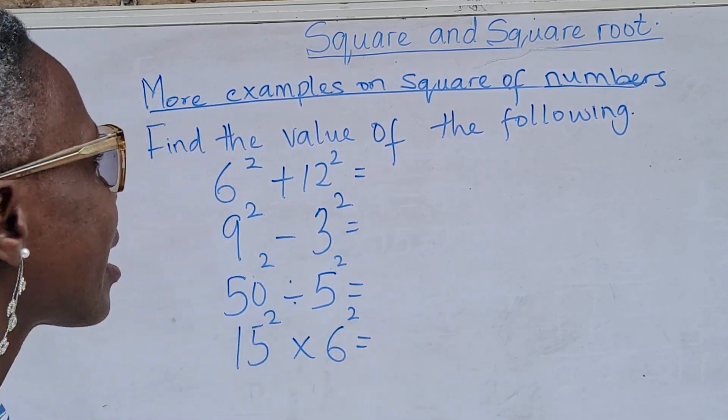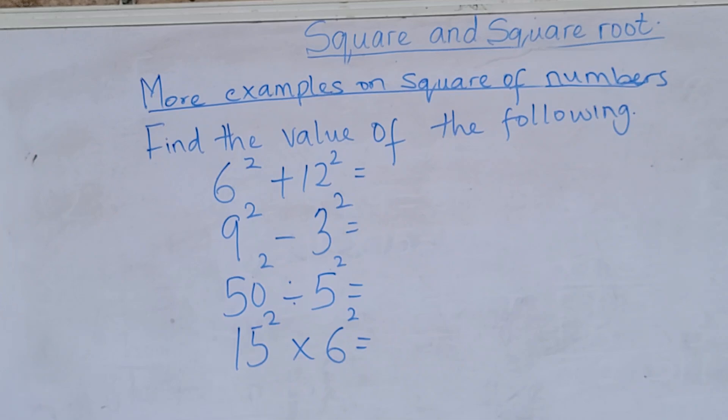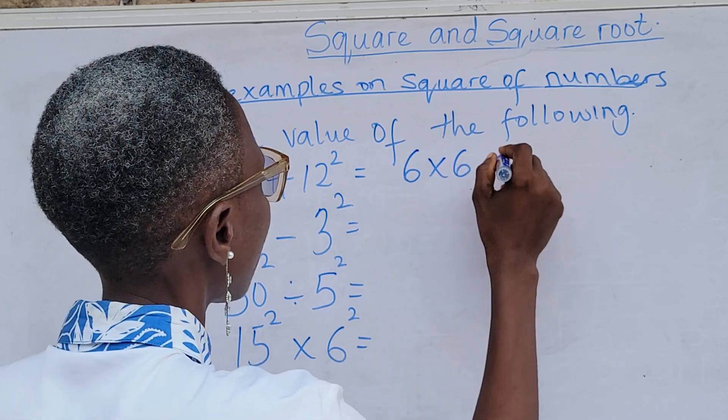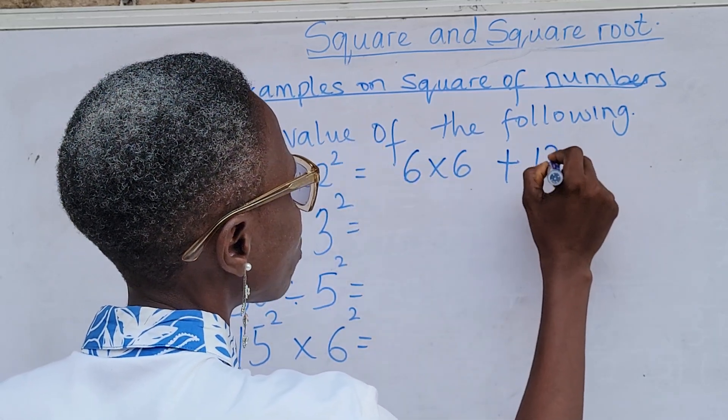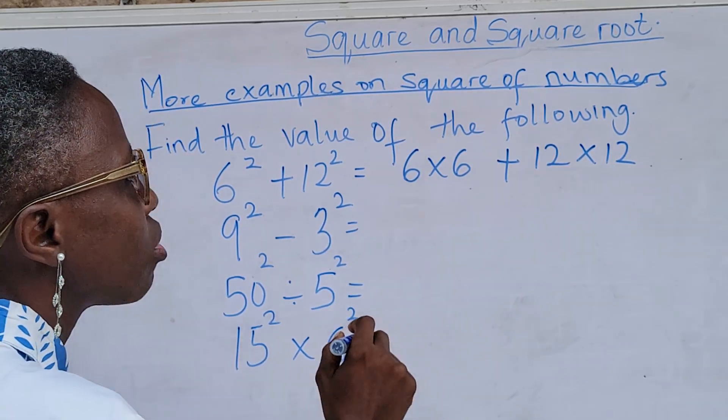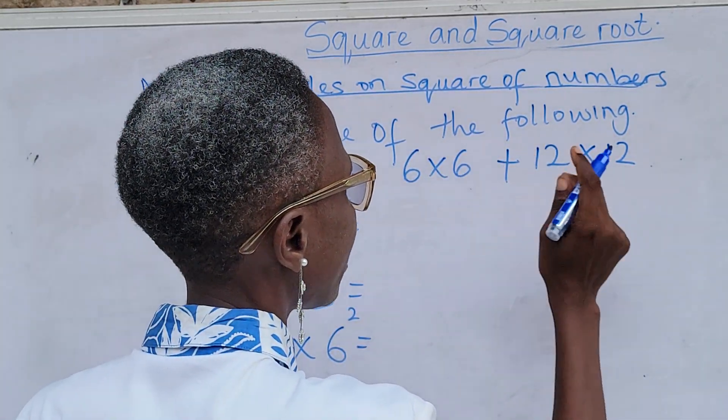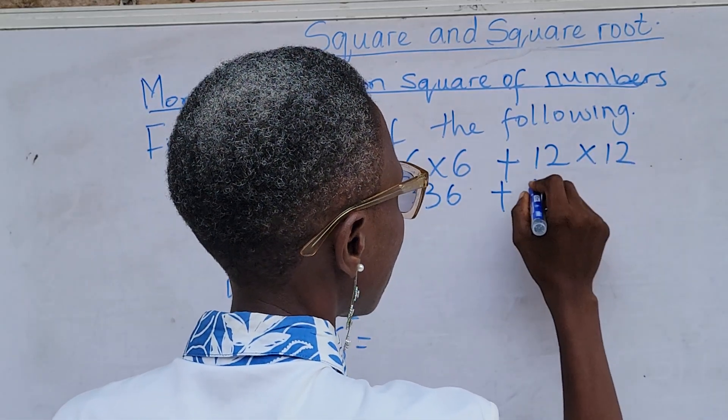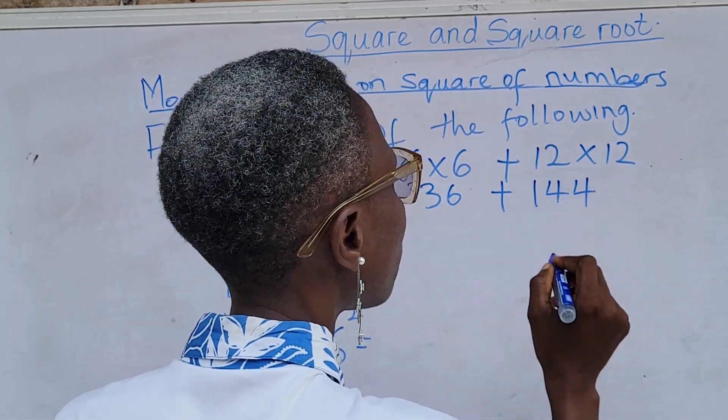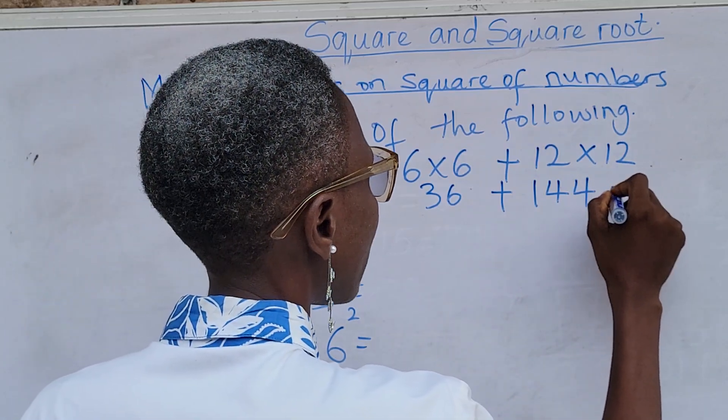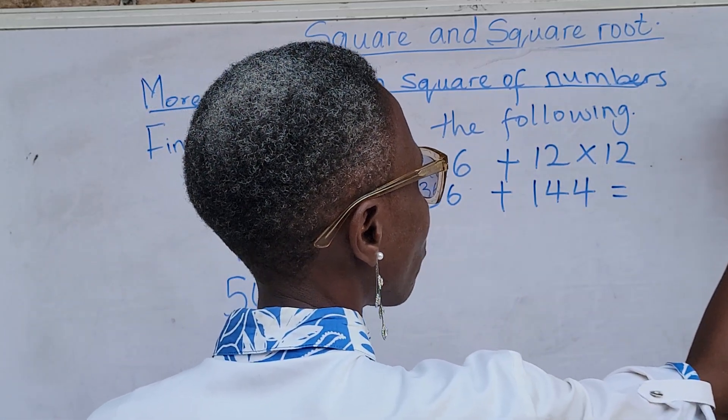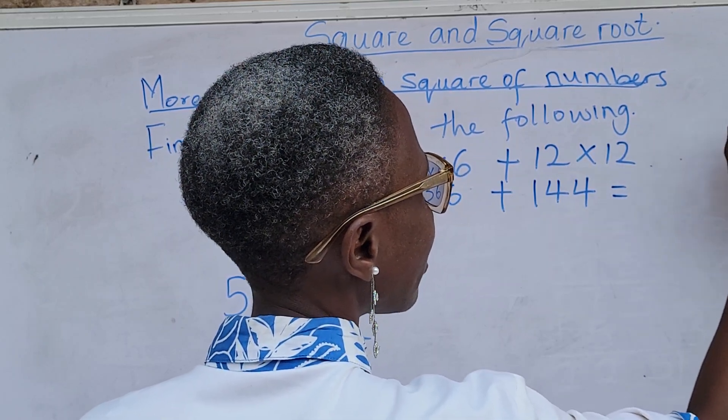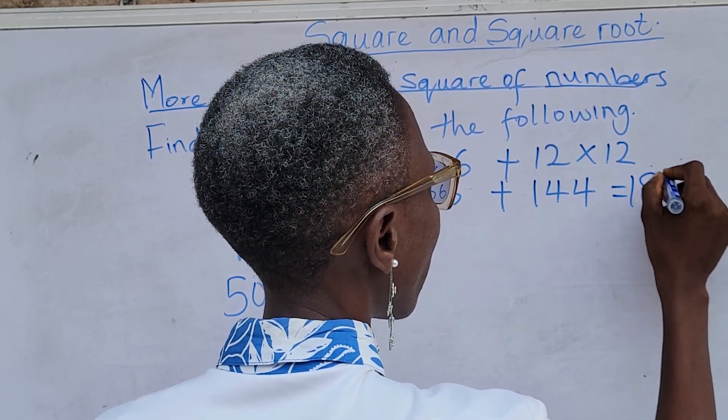With the understanding we have on how to do square of number, 6 raised to the power of 2 means 6 times 6 plus 12 raised to the power of 2 means 12 times 12. So, 6 times 6 is 36 plus 12 times 12 is 144. So, I can add up. 144 and 36. This is 0, this is 8, and this is 1. We have 180.